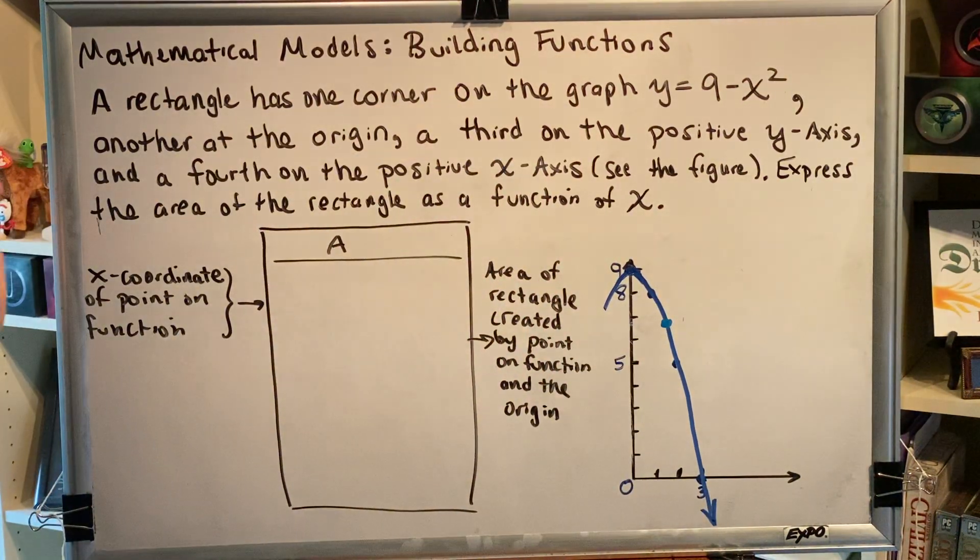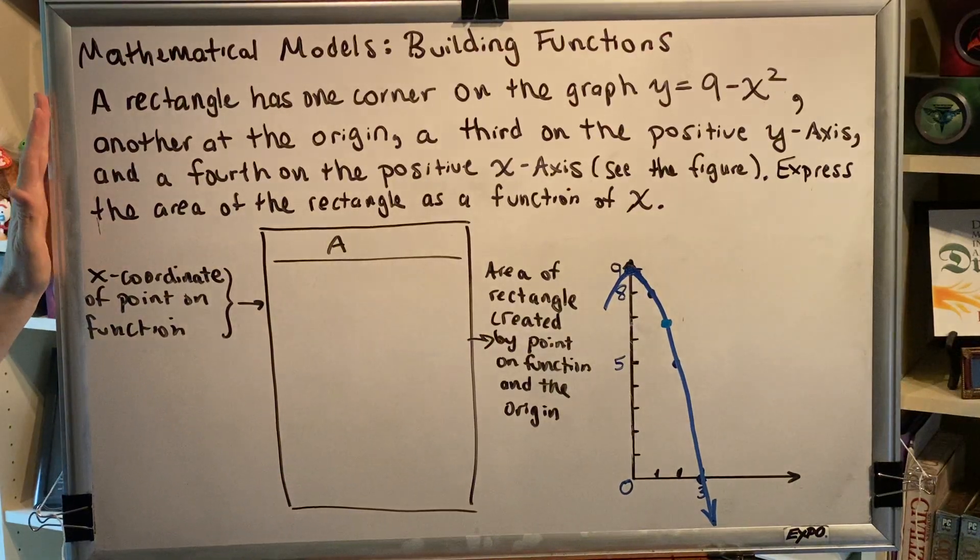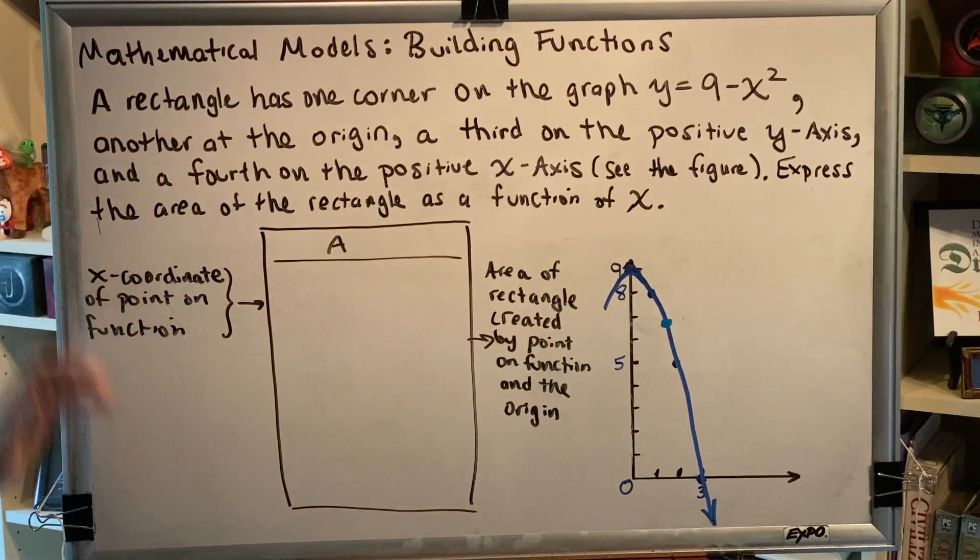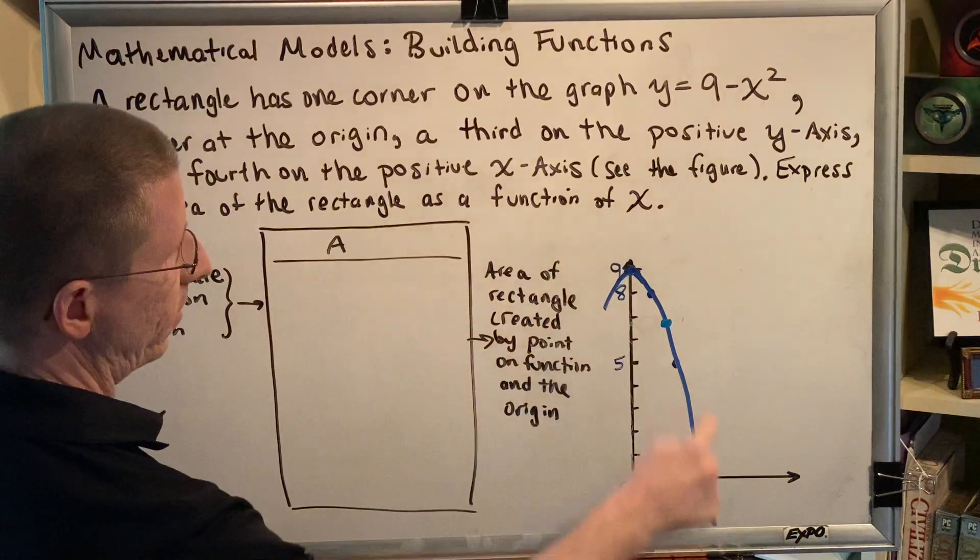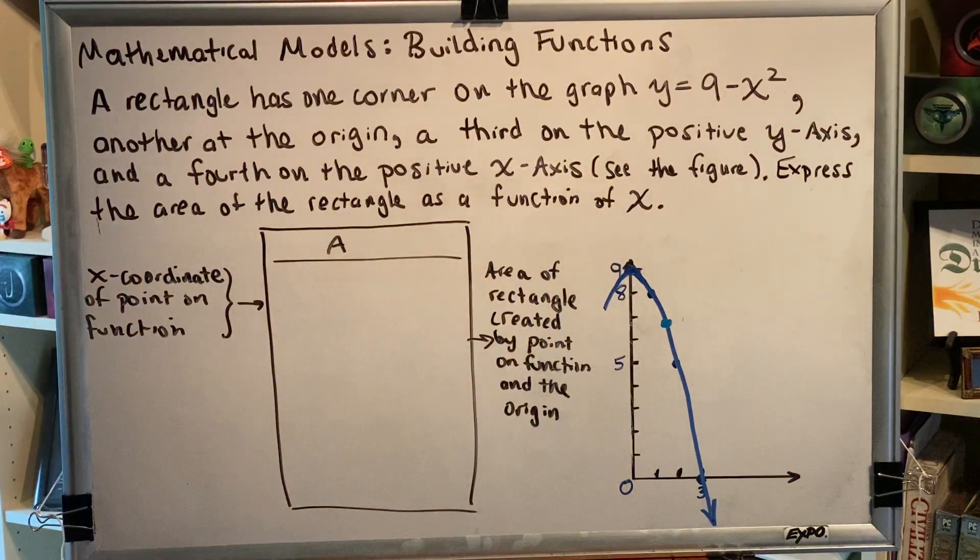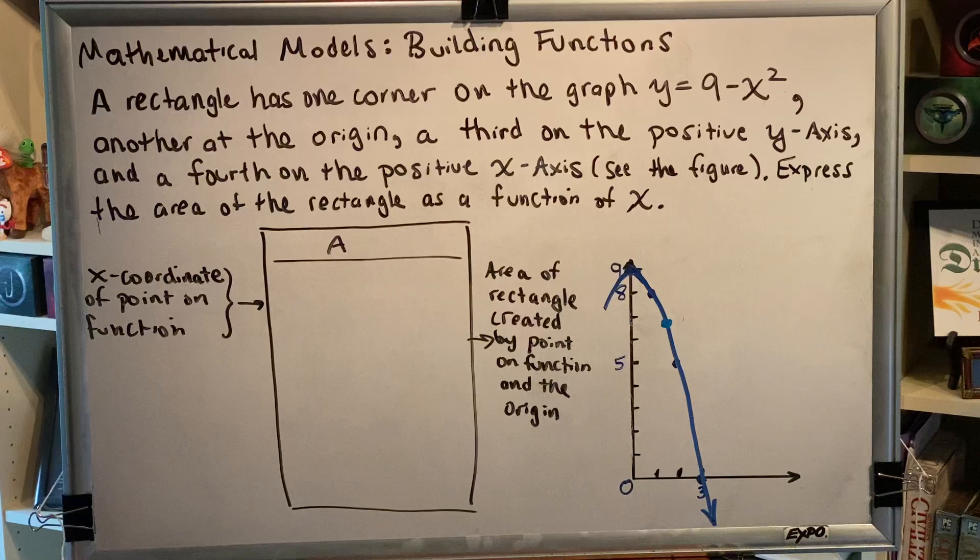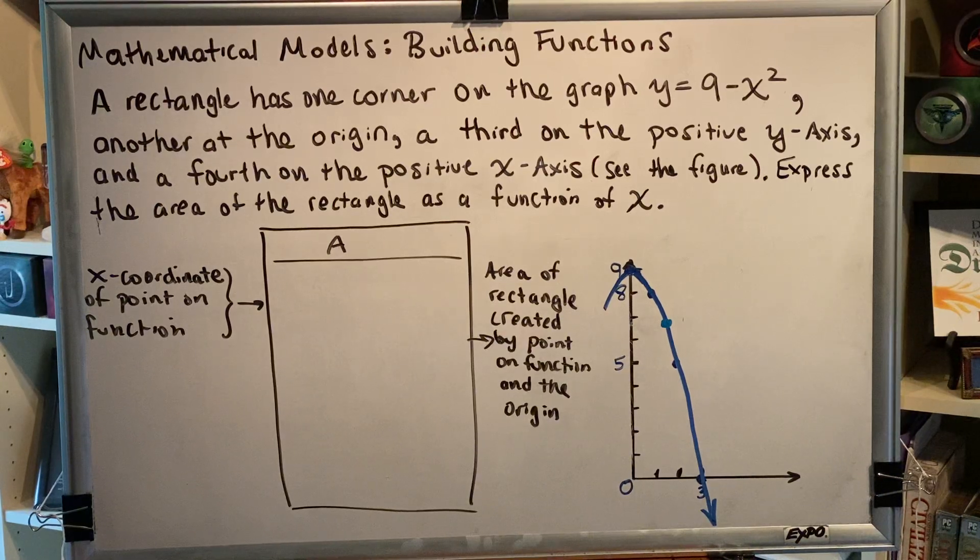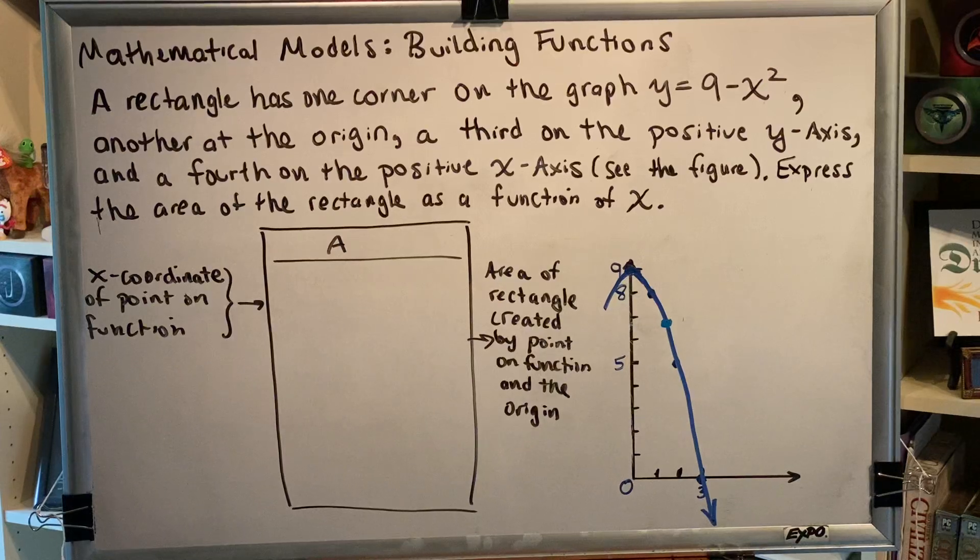Let's briefly reread the question. A rectangle has one corner on the graph of y = 9 - x², that's this blue parabola, another at the origin (0,0), a third on the positive y-axis, and a fourth on the positive x-axis. Express the area of the rectangle as a function of x.